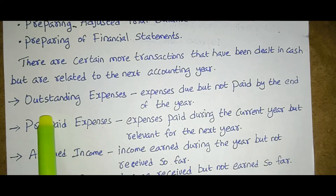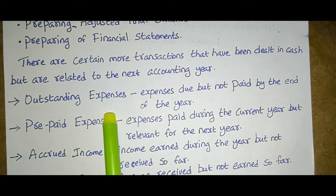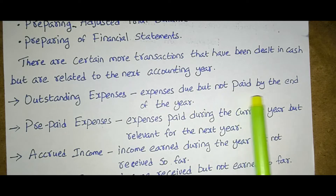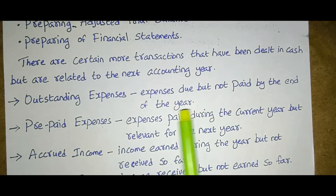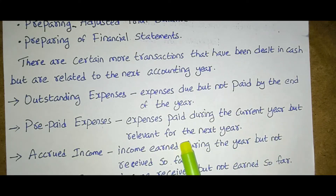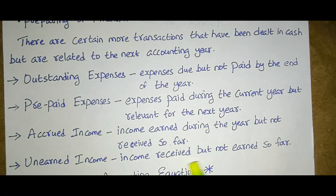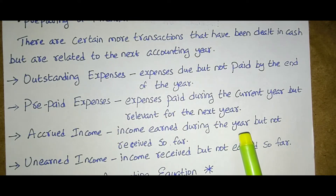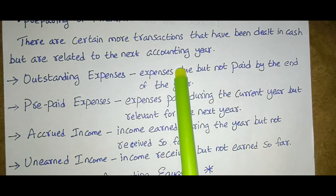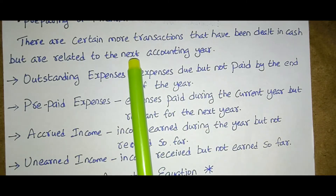We will now see these terms. Outstanding expenses: expenses due but not paid by the end of the year. Prepaid expenses: expenses paid during the current year but relevant for the next year. Accrued income: income earned during the year but not received so far. Unearned income: income received but not yet earned.